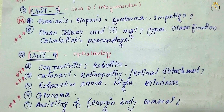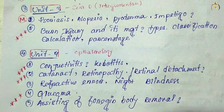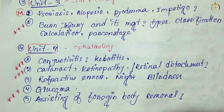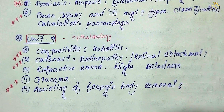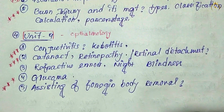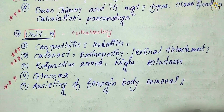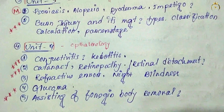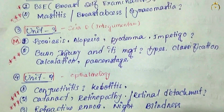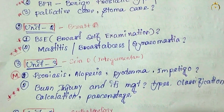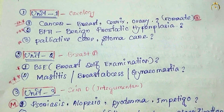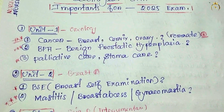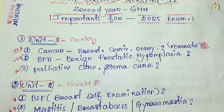Unit 4 covers eye disorders. Conjunctivitis, cataract, and glaucoma — these three are the key topics and one question will come from this unit. You can also prepare night blindness and acidic-related conditions. For all of them, know the simple meaning: signs, symptoms, causes, definition, and nursing management.